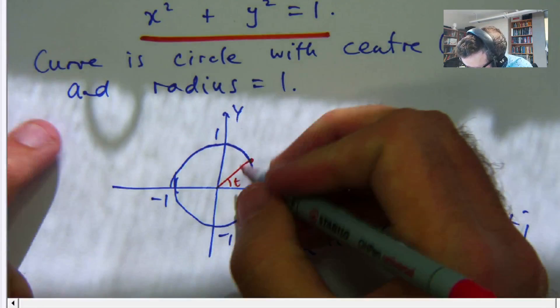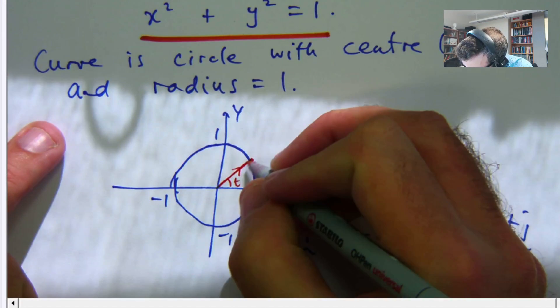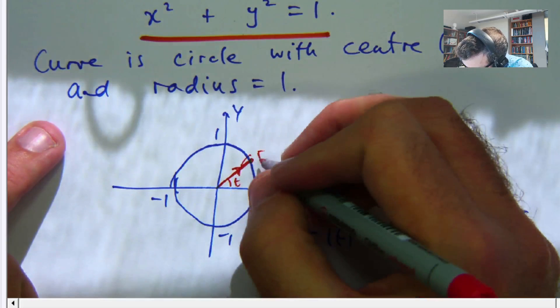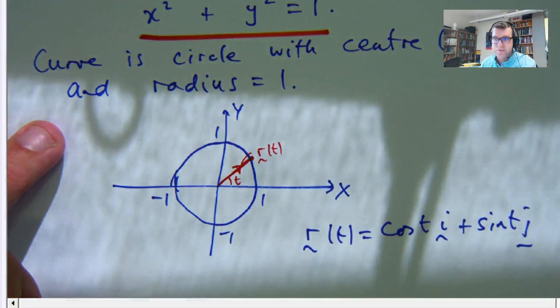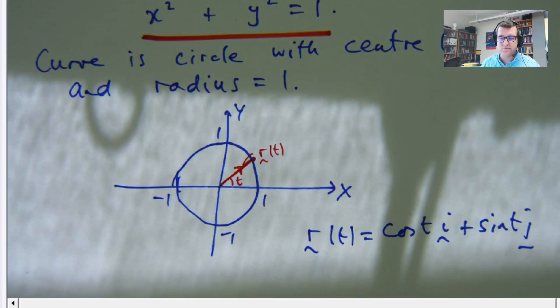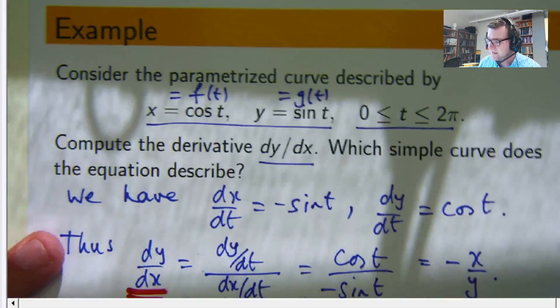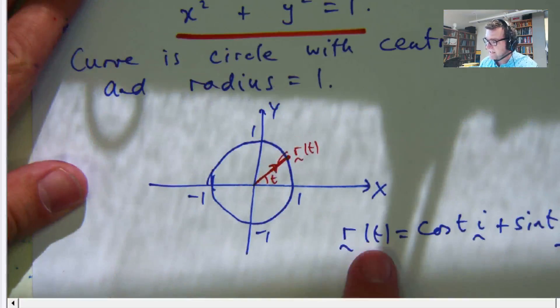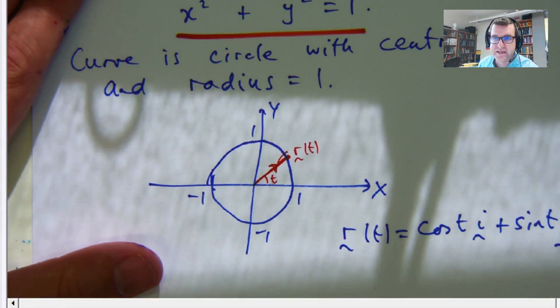So this thing would actually turn into a vector then, and that would be the vector r of t. So two ways to look at it: just through these sort of separated points, or you can combine it into some sort of vector function.